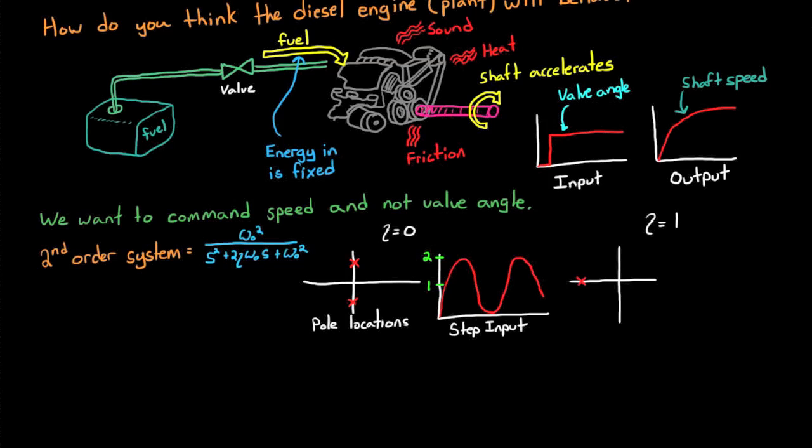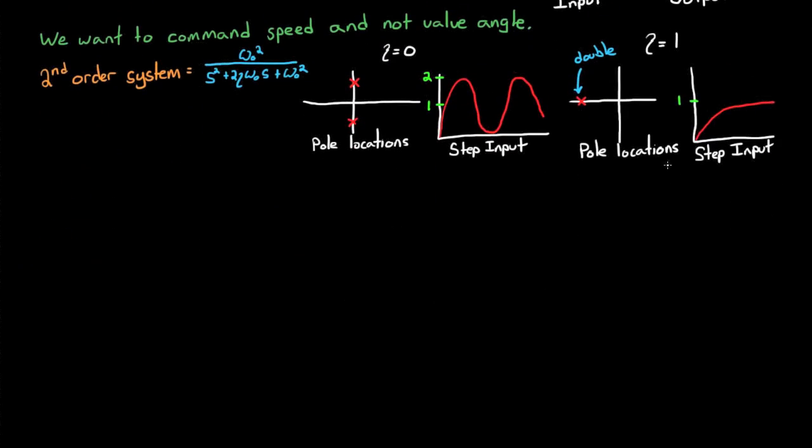On the other hand, a critically damped system would have no overshoot at all, and would slowly approach the commanded rate, eventually reaching it at time equals infinity. This is a good damping ratio for systems that can't afford even the slightest amount of overshoot. The problem states that this system needs damping greater than or equal to 0.7. Or in other words, the system can accept a small amount of overshoot, or the shaft speed accelerating slightly past the commanded speed in order to gain a faster response.